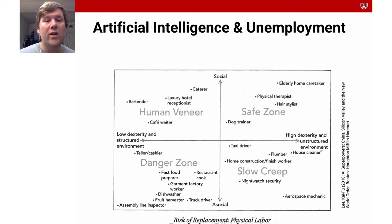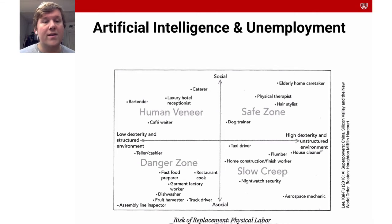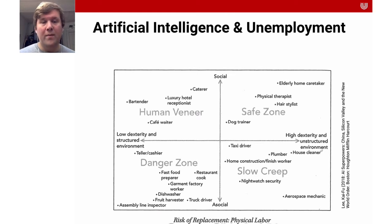We're looking at which physical labor jobs are at risk of being replaced by artificial intelligence and robotics. You can see that, for instance, restaurant cook and fast food preparer are in the danger zone and likely to be replaced. Whereas something like the caretaker of elderly people is quite in the safe zone, because it's a very social job dealing with people, and it's a very unstructured environment where a lot of things can happen.